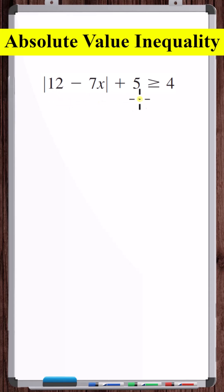Let's solve this absolute value inequality. The first step is to isolate the absolute value expression on one side and constants on the other side of the inequality. So let's subtract 5 from both sides. 4 minus 5 is negative 1.